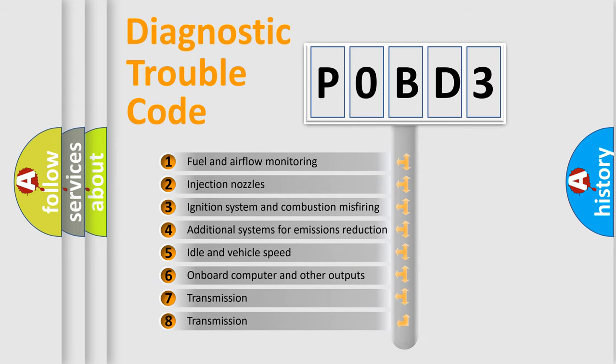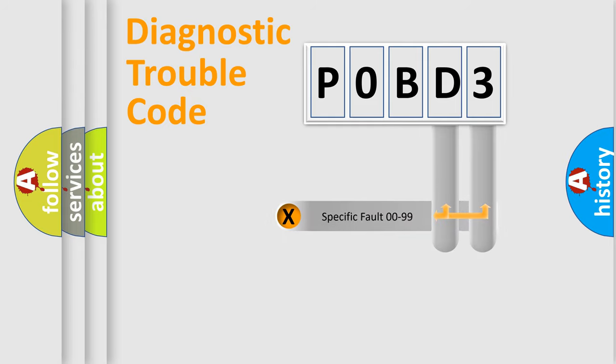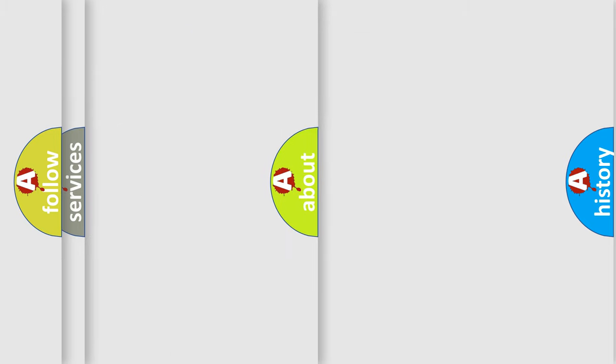The distribution shown is valid only for the standardized DTC code. Only the last two characters define the specific fault of the group. Let's not forget that such a division is valid only if the second character code is expressed by the number zero.